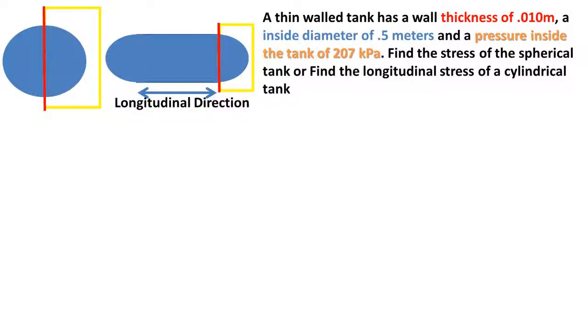In this problem, we have a thin-walled spherical pressure vessel, or an end of a cylindrical pressure vessel, with a wall thickness of 0.01 meters and an inside diameter of 0.5 meters, and a gauge pressure inside the pressure vessel of 207 kilopascals.